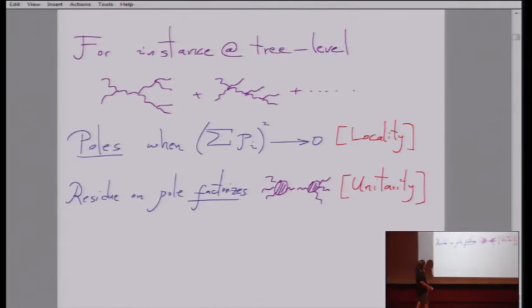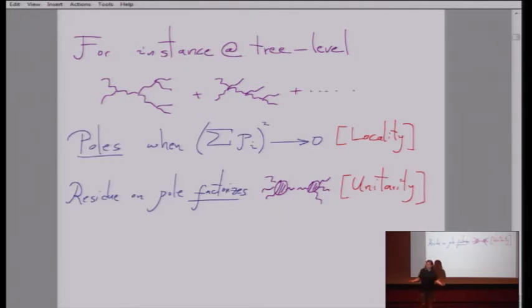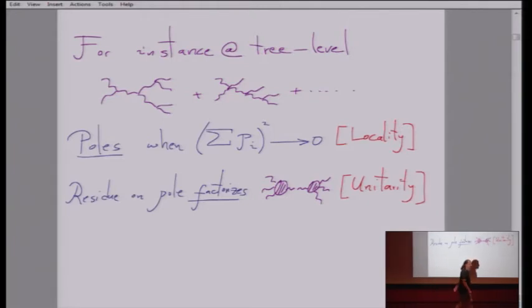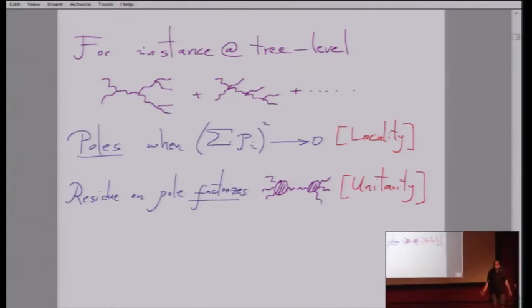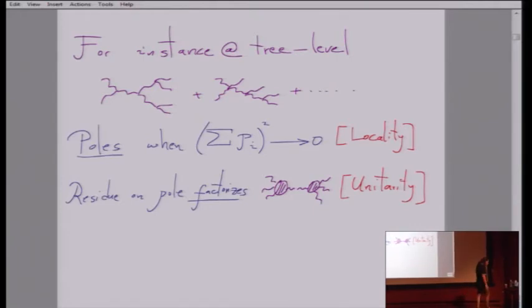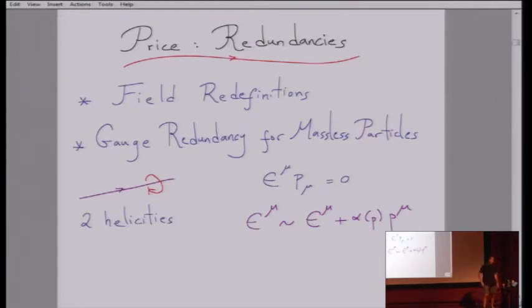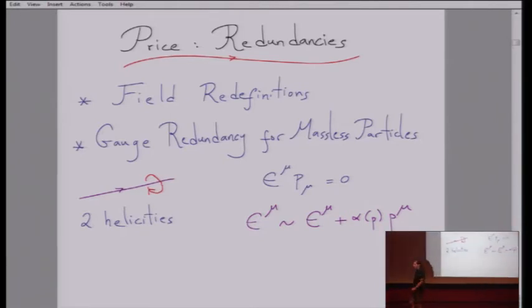Unitarity is encoded in what happens on those poles. As you approach a pole, it's not just that the amplitude has a singularity — what multiplies the singularity has a very simple interpretation. The sum of the momenta going on-shell is interpreted as a physical particle. So unitarity tells you that on the pole, the amplitude has to factorize into on-shell lower-particle amplitudes, summed over all possible helicities of the particles that can propagate there. Locality is where the poles are; unitarity is what happens on the poles — factorization properties. Feynman diagrams make that completely manifest, but they make it manifest at a price.